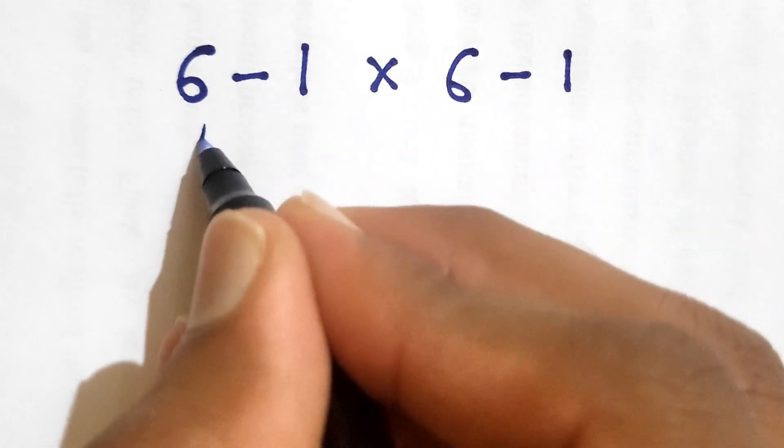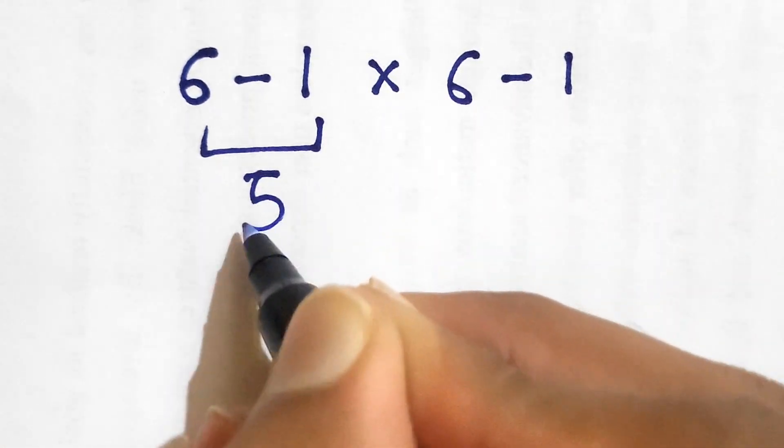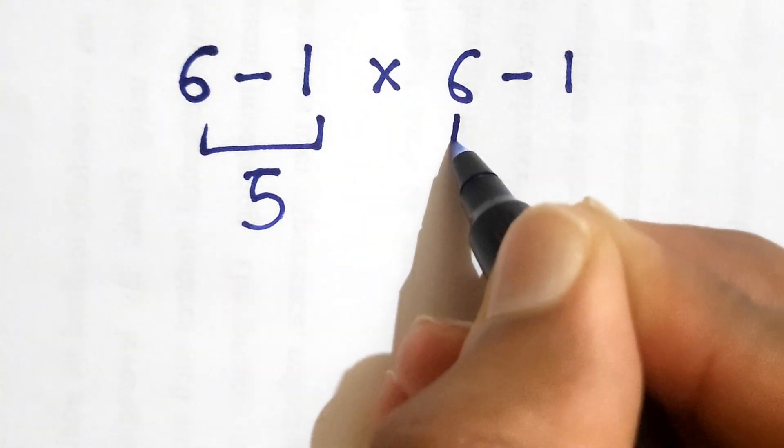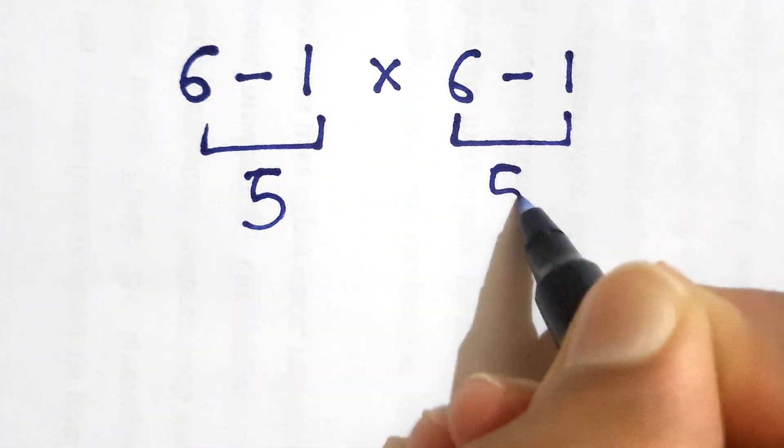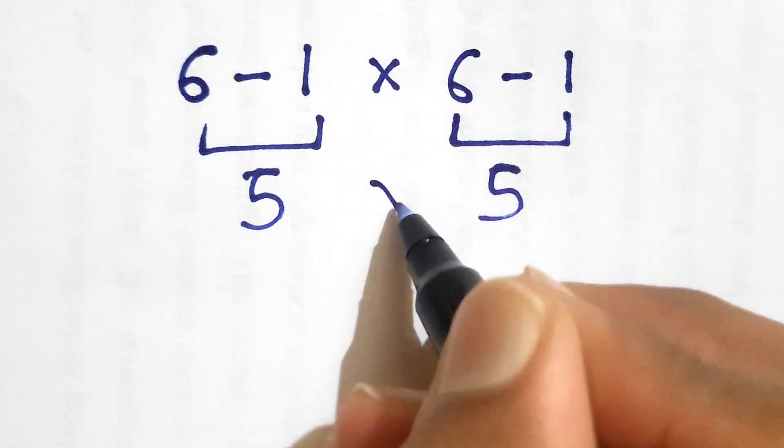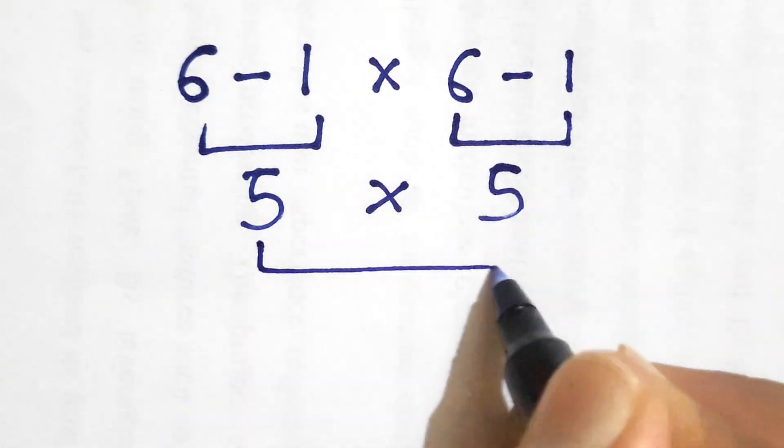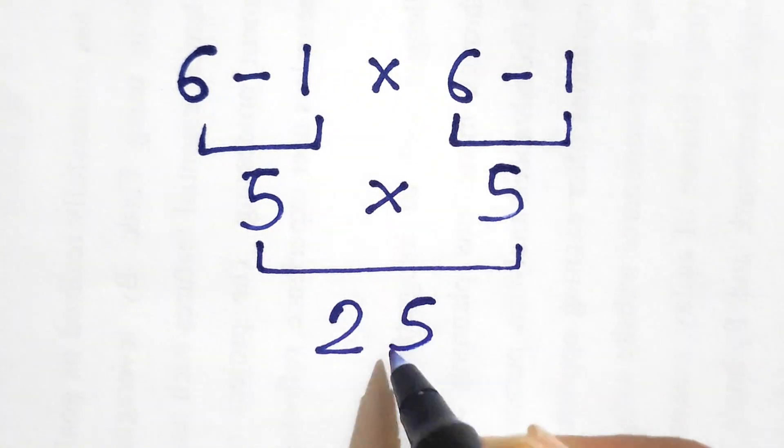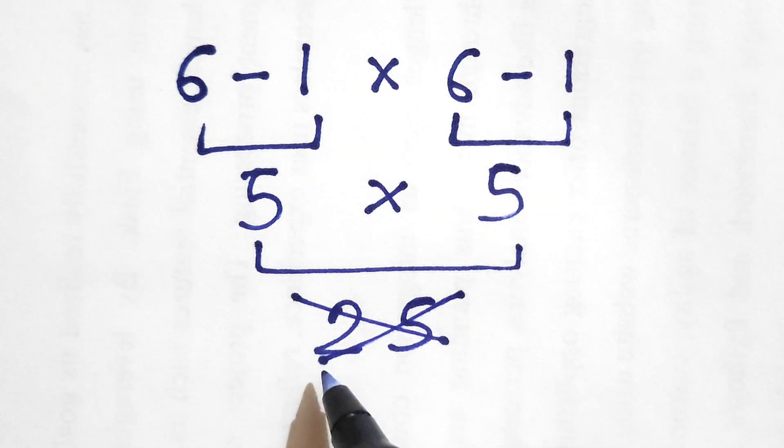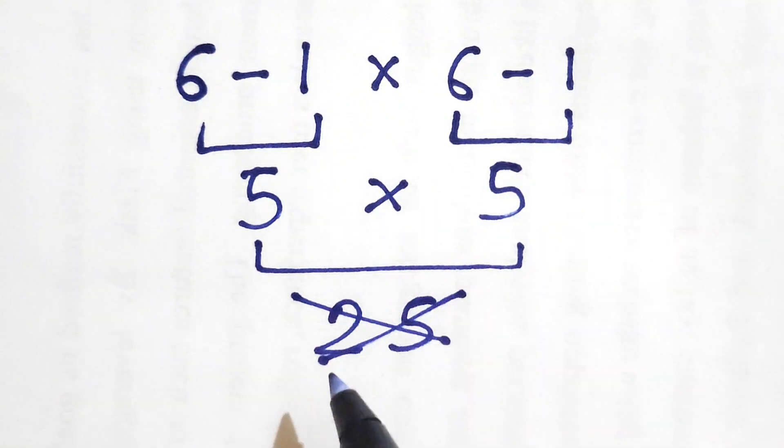6 minus 1 gives us 5, and again the 6 minus 1 also gives us 5. Now 5 times 5 gives us 25, but this answer is not correct because we have not followed the order of operations.